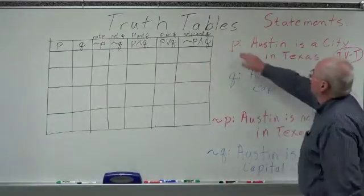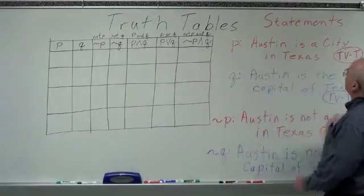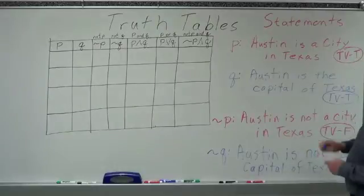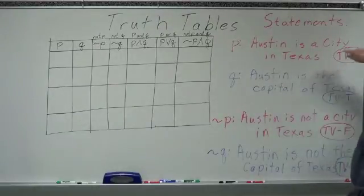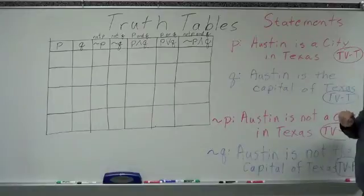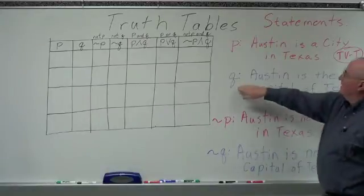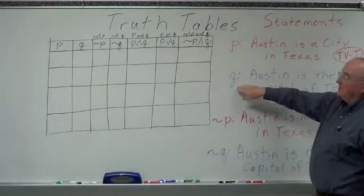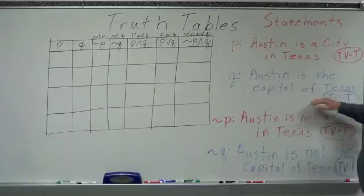Let's take two simple statements. Statement P: Austin is a city in the state of Texas. The truth value of that statement is true. Statement Q is: Austin is the capital of Texas.